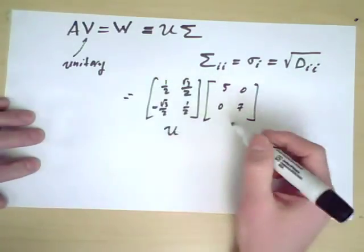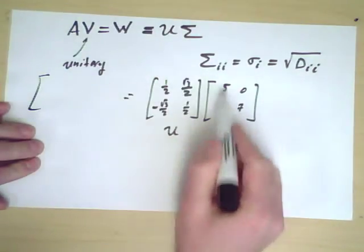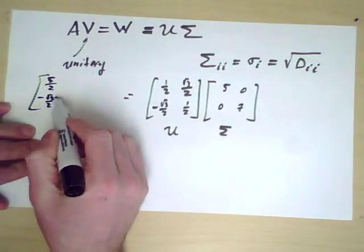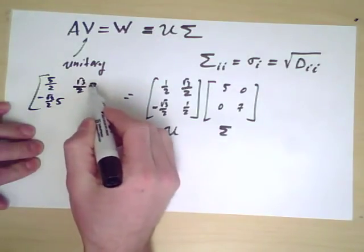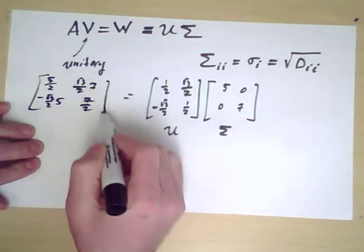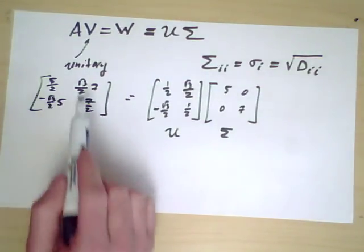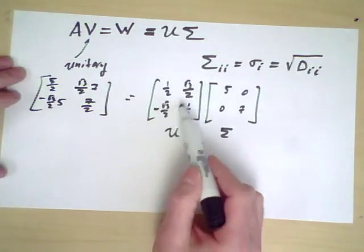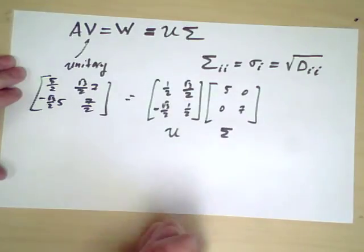Then we're saying that W is 5 times the first column and 7 times the second column. So this set of vectors is orthogonal but doesn't always have norm 1, but we can obtain it by taking a unitary set or an orthogonal set of vectors and then rescaling them individually.